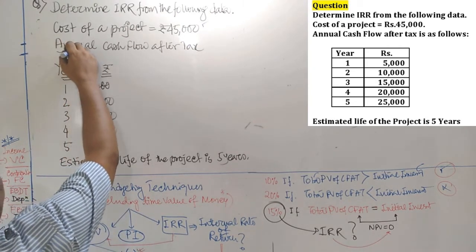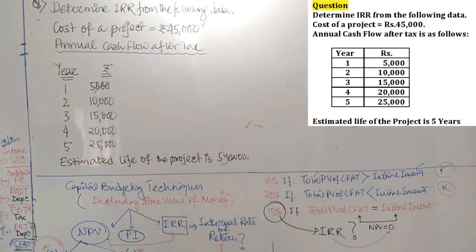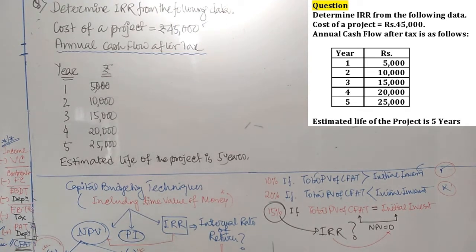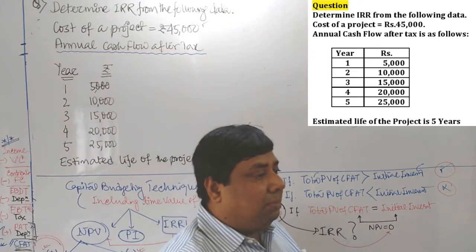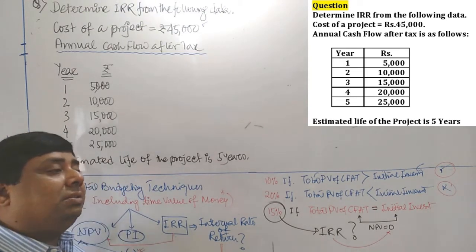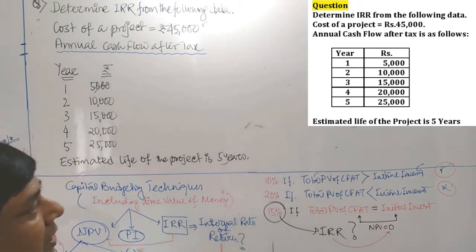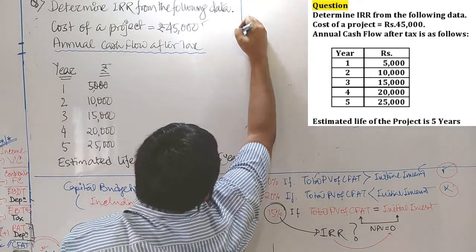Look at this particular line — annual cash flow after tax (CFAT) is given to us. As I said earlier, before calculation of IRR, you have to think about how to calculate NPV of the project. Your first job is to calculate NPV, and you have to process your question on that particular line.